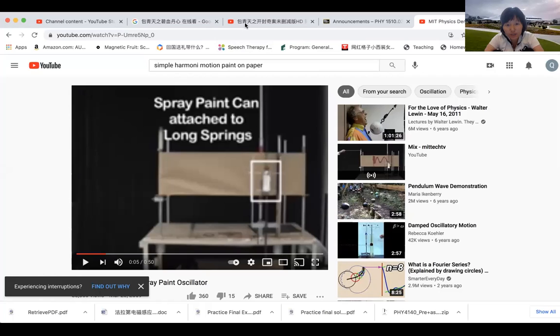As I was trying to show before I got cut off, this is an actual demonstration of when you have a mass oscillating up and down, and if you attach paint that goes up and down and paint on a piece of paper while dragging it, you're able to see the simple harmonic oscillation on the position-time graph.